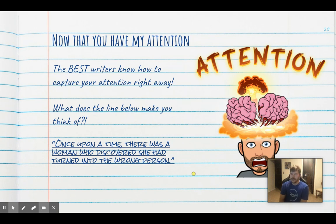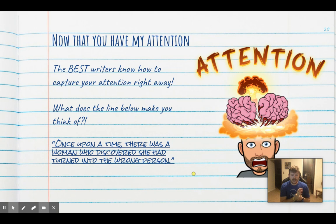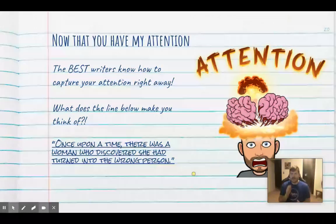If I think about a woman that turned into the wrong person, I think of Fiona from Shrek — she didn't expect to be turned into an ogre. Or maybe this was somebody who thought they were supposed to do something their whole life, ended up doing it, only to find out later they needed to do something else. There are so many possibilities with that quote that I'm like, I need to read on.